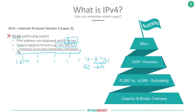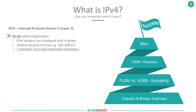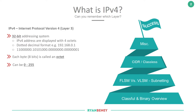It's represented in binary as far as our PC is concerned, but we as humans see it and translate it into dotted decimal format. Each byte is eight bits — we call it an octet. It can be anything from zero to 255.